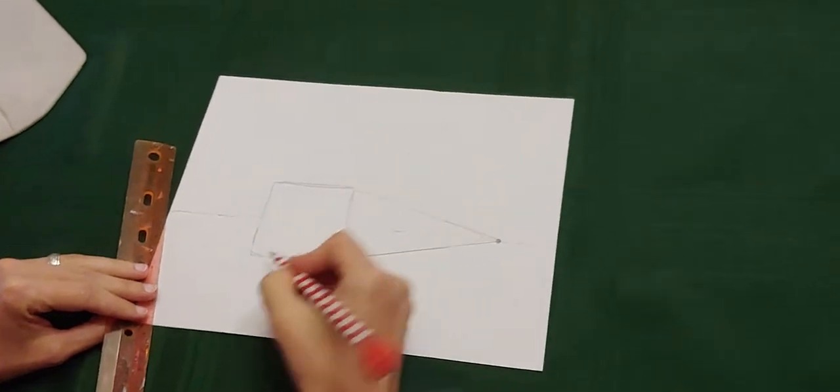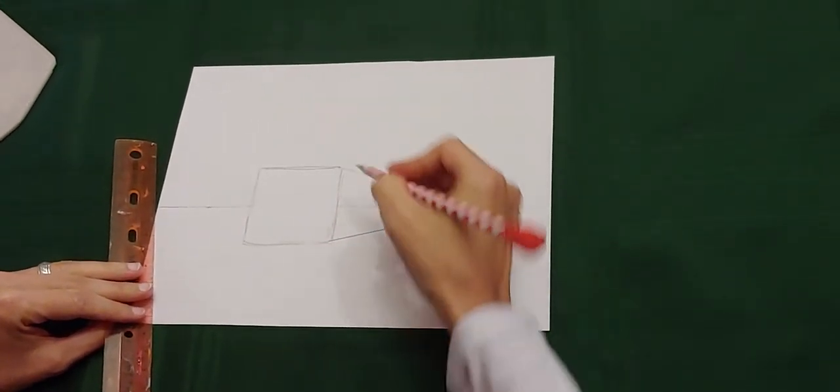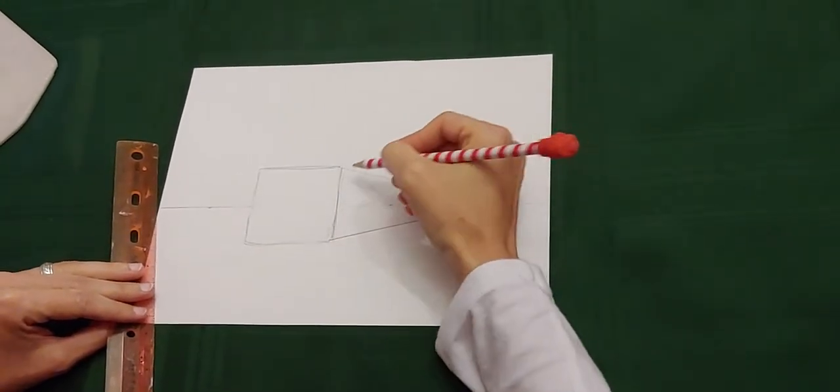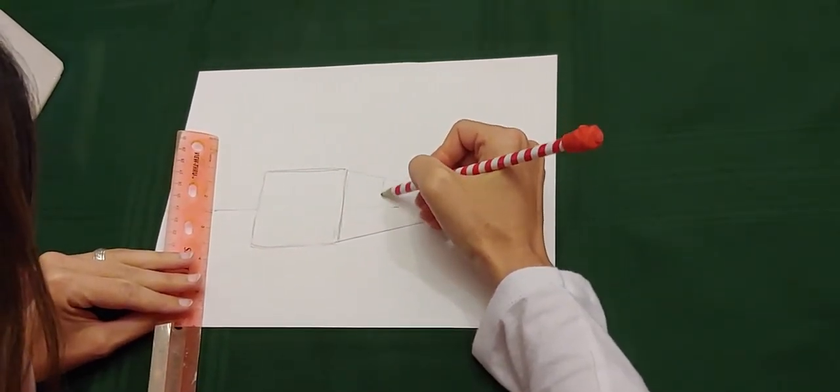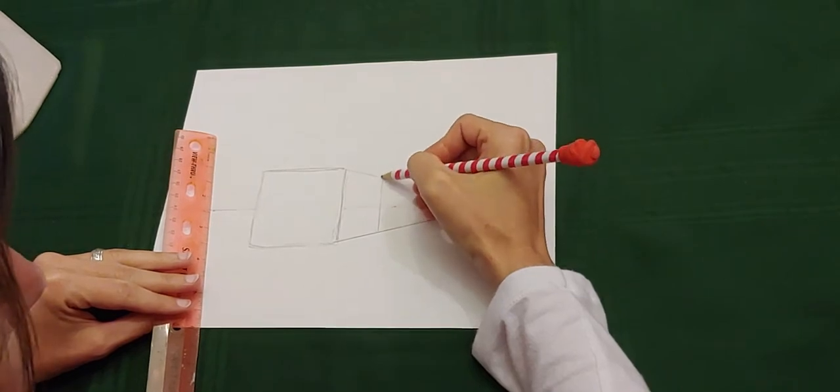We have a little bit more of our cube drawn. Now we need to put the side of the cube. You could use your ruler if you want, but I'm just going to freehand it. You can make another side of the cube right here.